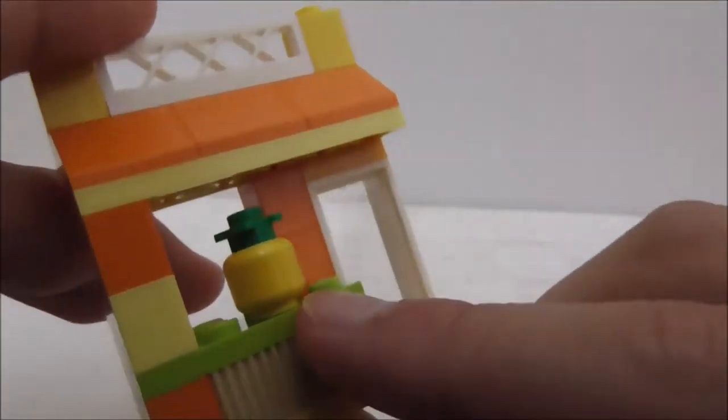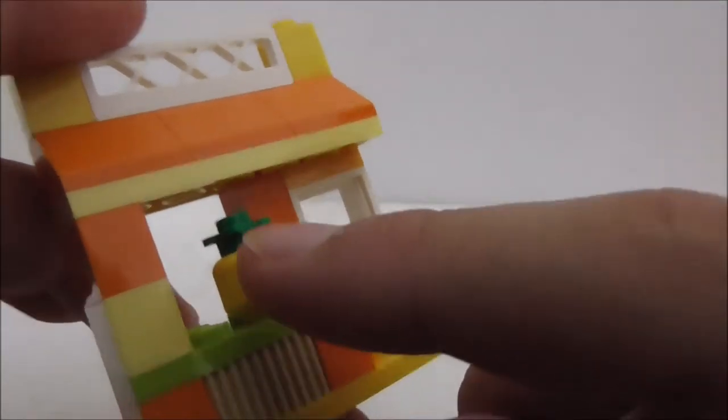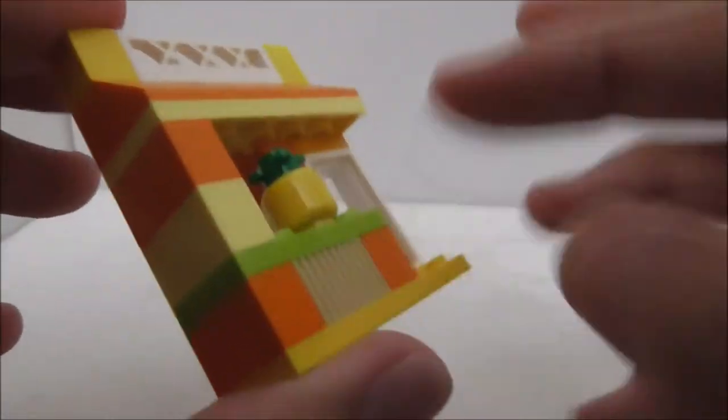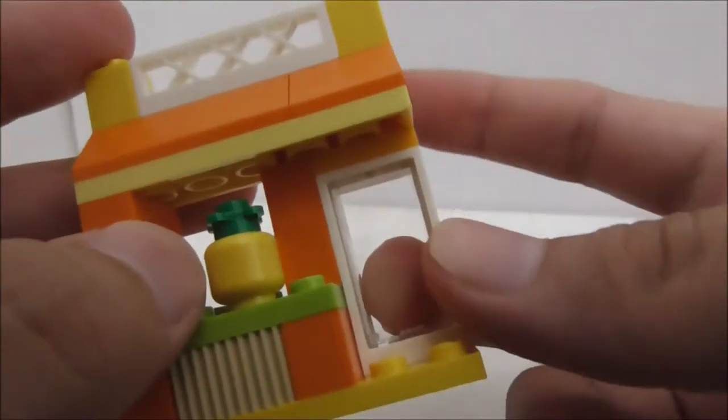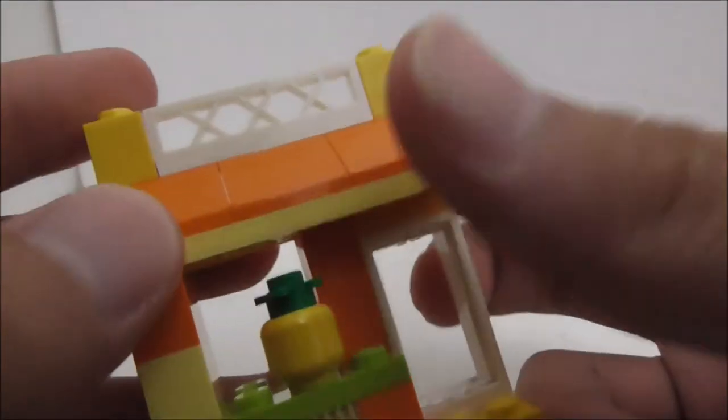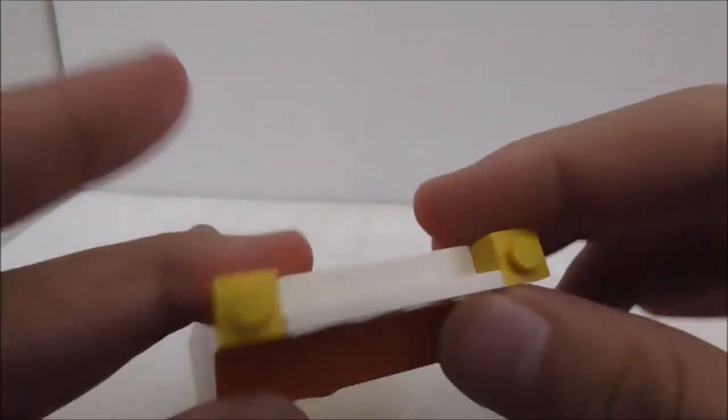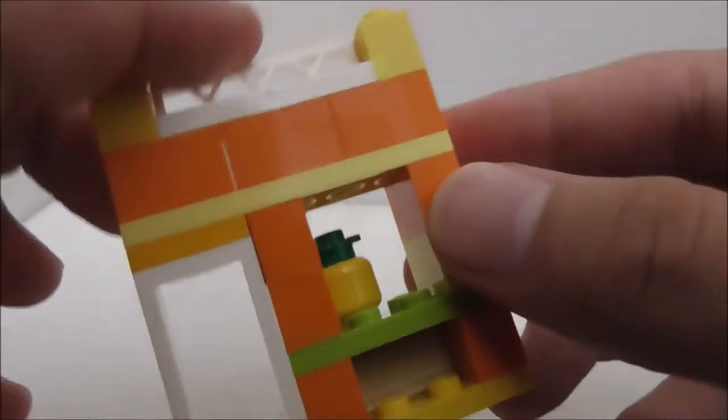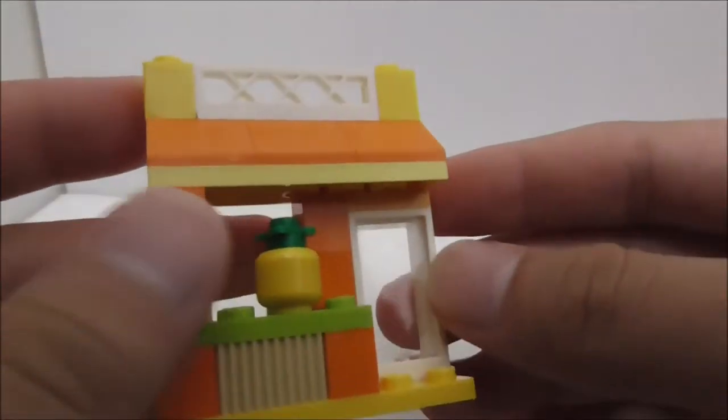You got all these orange pieces with some yellow ones. You got this window and at the top you got this railing type thing. There's the inside, you got this table type thing. But aside from that, that's pretty much it for this build.